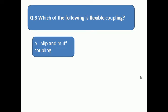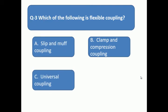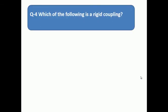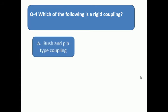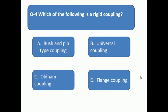Question 4: Which of the following is a rigid coupling? A: bush and pin type coupling, B: universal coupling, C: Oldham coupling, D: flange coupling.